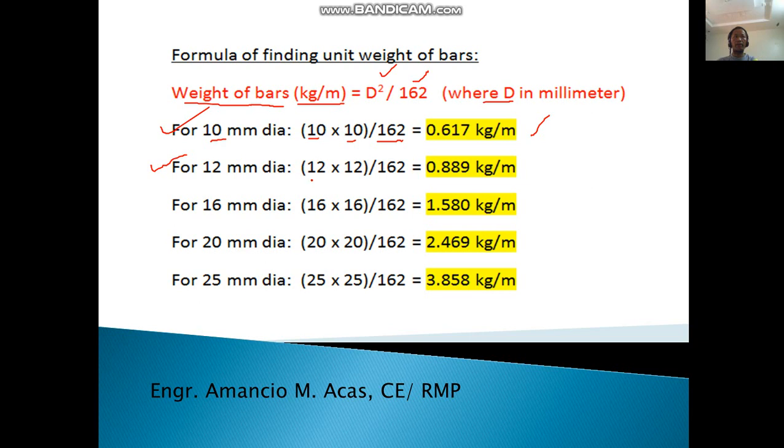For 16mm diameter: 16 times 16 divided by 162 equals 1.580 kilogram per meter. For 20mm: 20 times 20 divided by 162 equals 2.469 kilogram per meter. For 25mm: 25 times 25 divided by 162 equals 3.858 kilogram per meter.